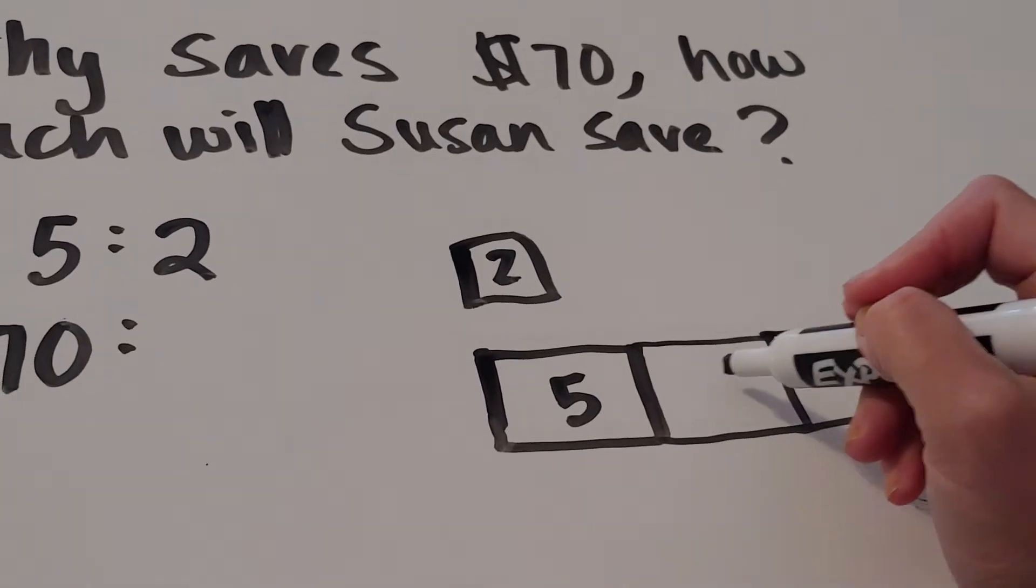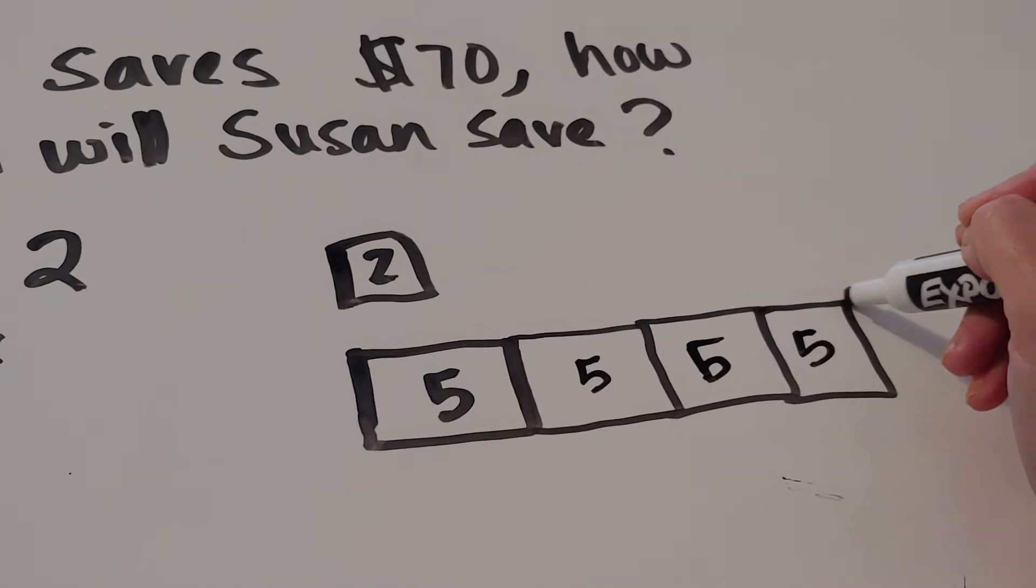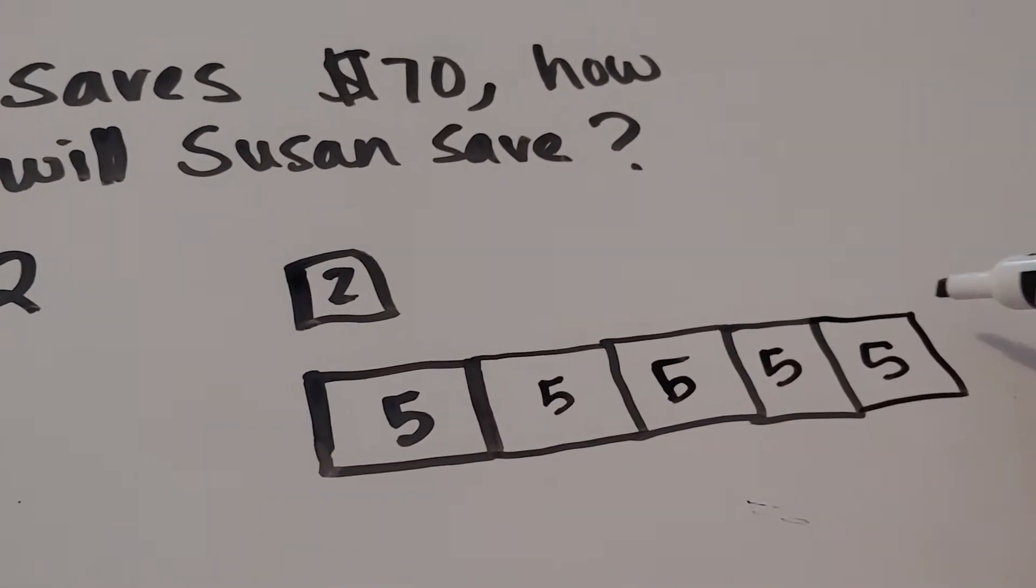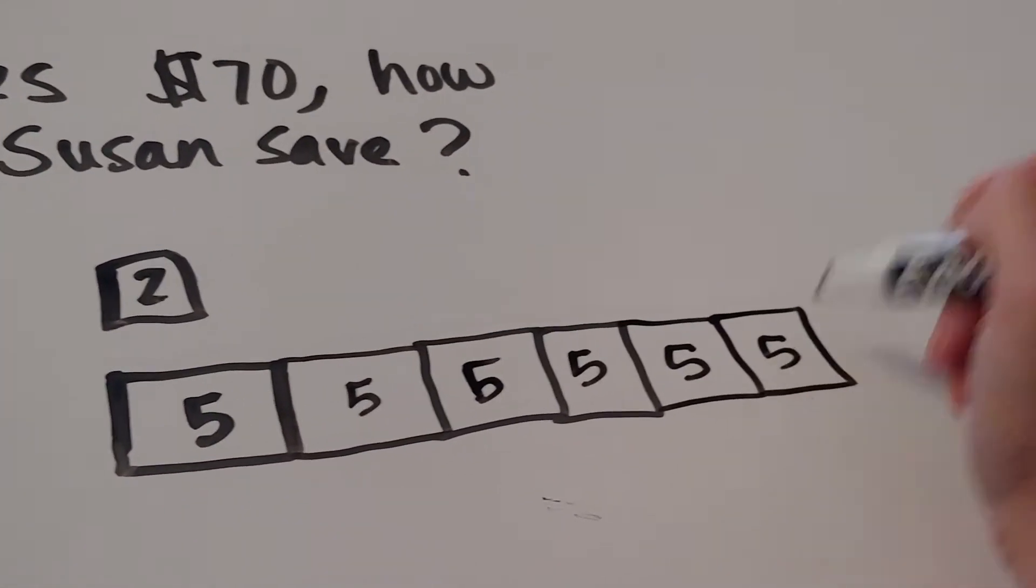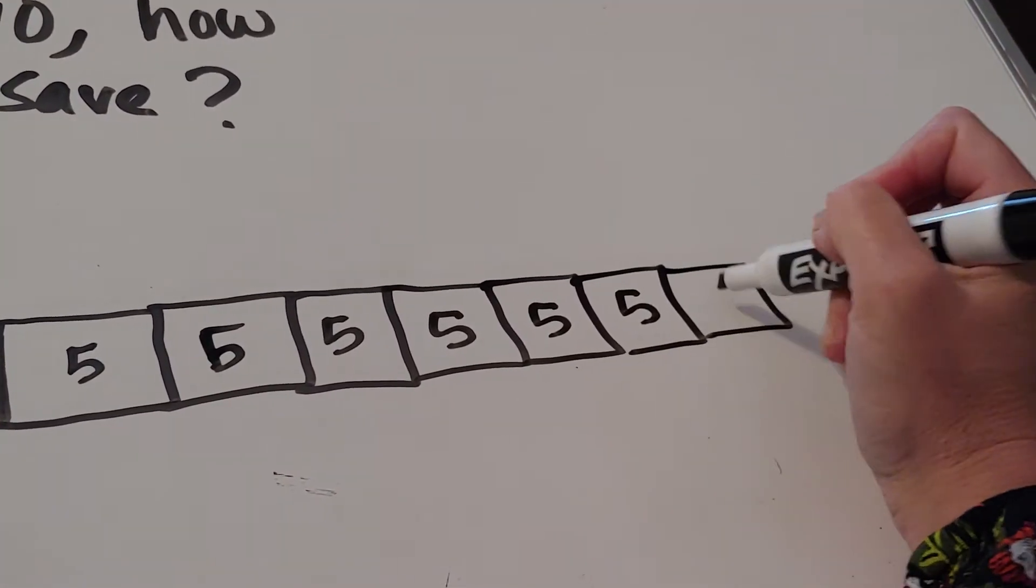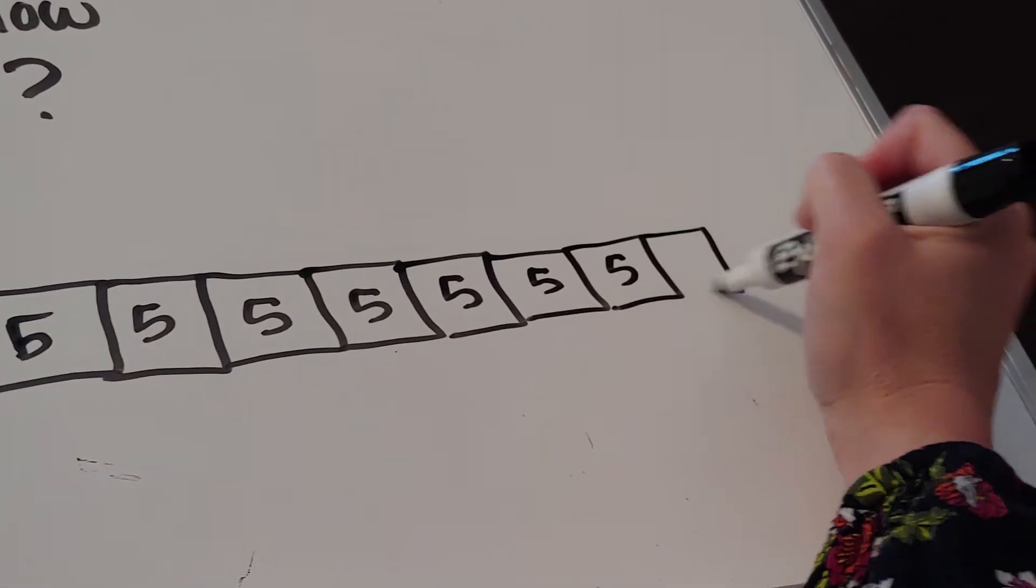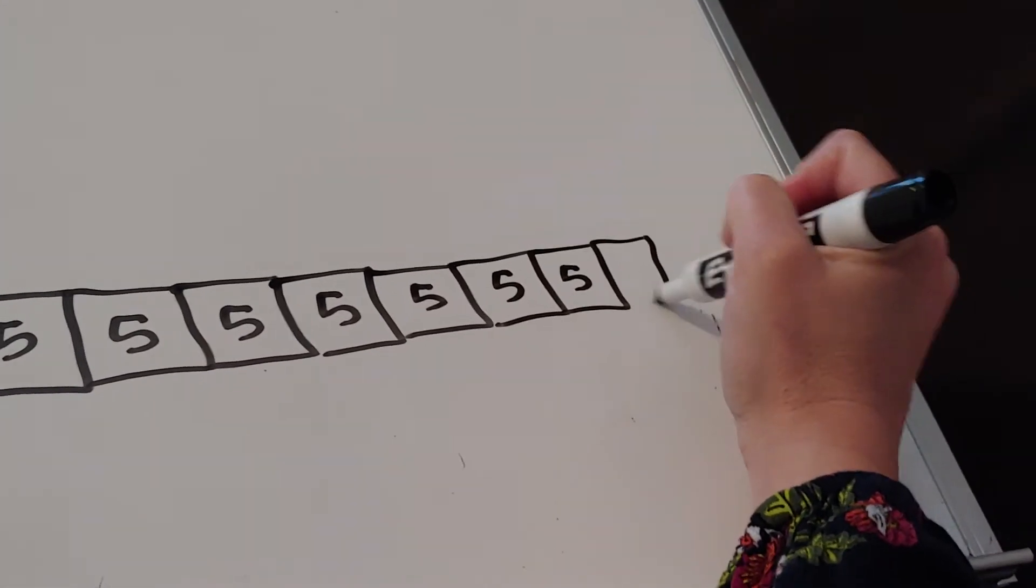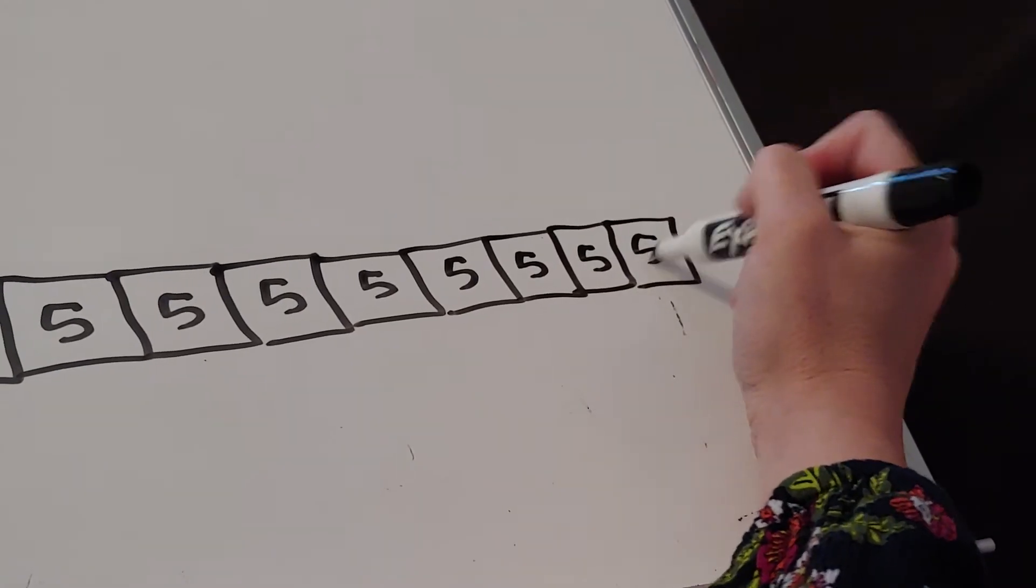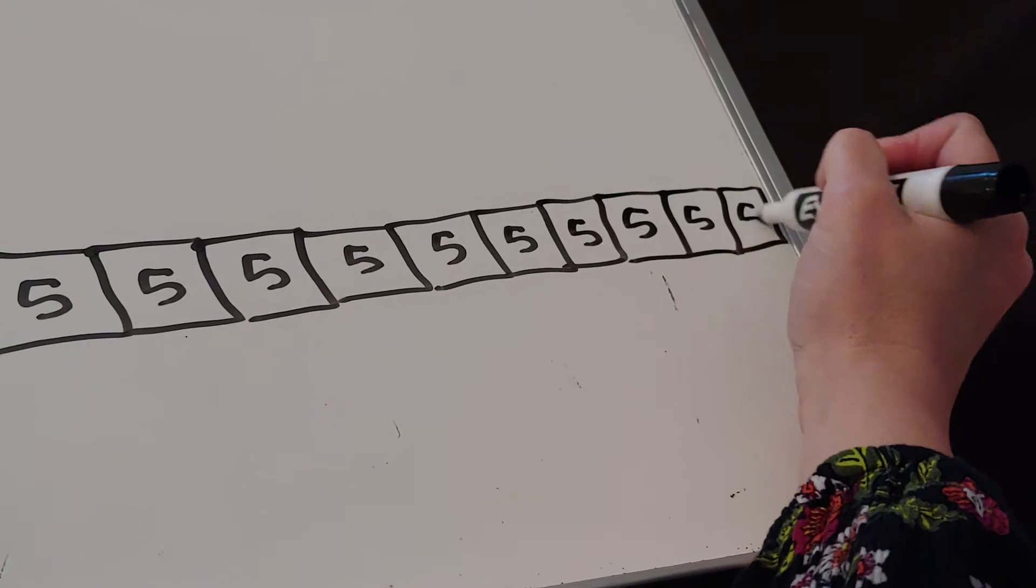So five, ten, fifteen, twenty, twenty-five, thirty, thirty-five, forty, forty-five, fifty, fifty-five, sixty, sixty-five, seventy. Holy cow, I just made it.